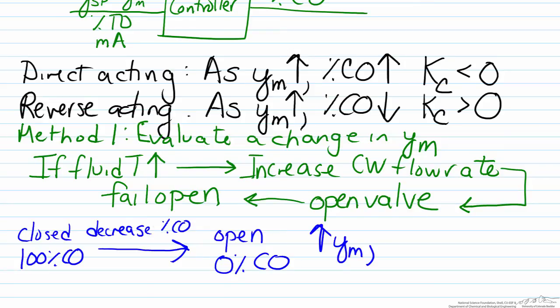Thus, as we have an increase in the value of the measured variable, that is going to require a decrease in the percent controller output. So what that means is our final decision here would be to have a reverse acting controller.